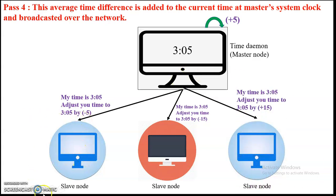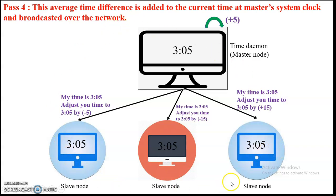Slave node 1, which was at 3:10, reduces itself by 5 minutes and adjusts to 3:05. Slave node 3, which was at 2:50, increases its timestamp by 15 minutes to reach 3:05. Now all nodes — the master as well as all slave nodes — are synchronized at the same clock time of 3:05. They can now communicate with each other in a synchronous manner. This is how synchronization is achieved with Berkeley's algorithm.